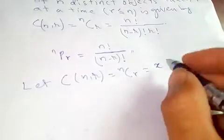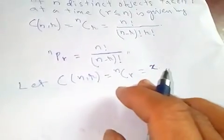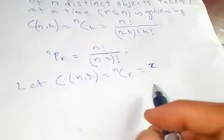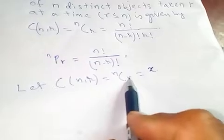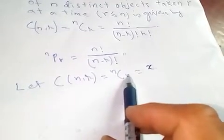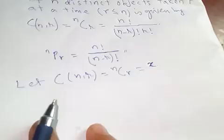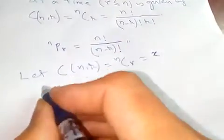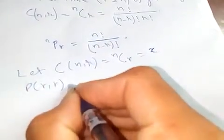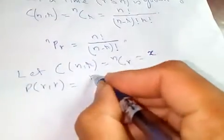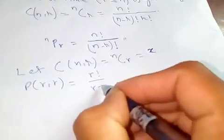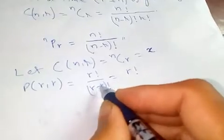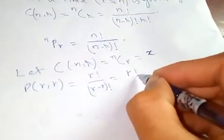Now in every combination there are r objects, and these r objects can be permuted in P(r,r) ways. P(r,r) equals r! over (r-r)! which is r! over 0! factorial, which equals r! since zero factorial is one. So r! ways.